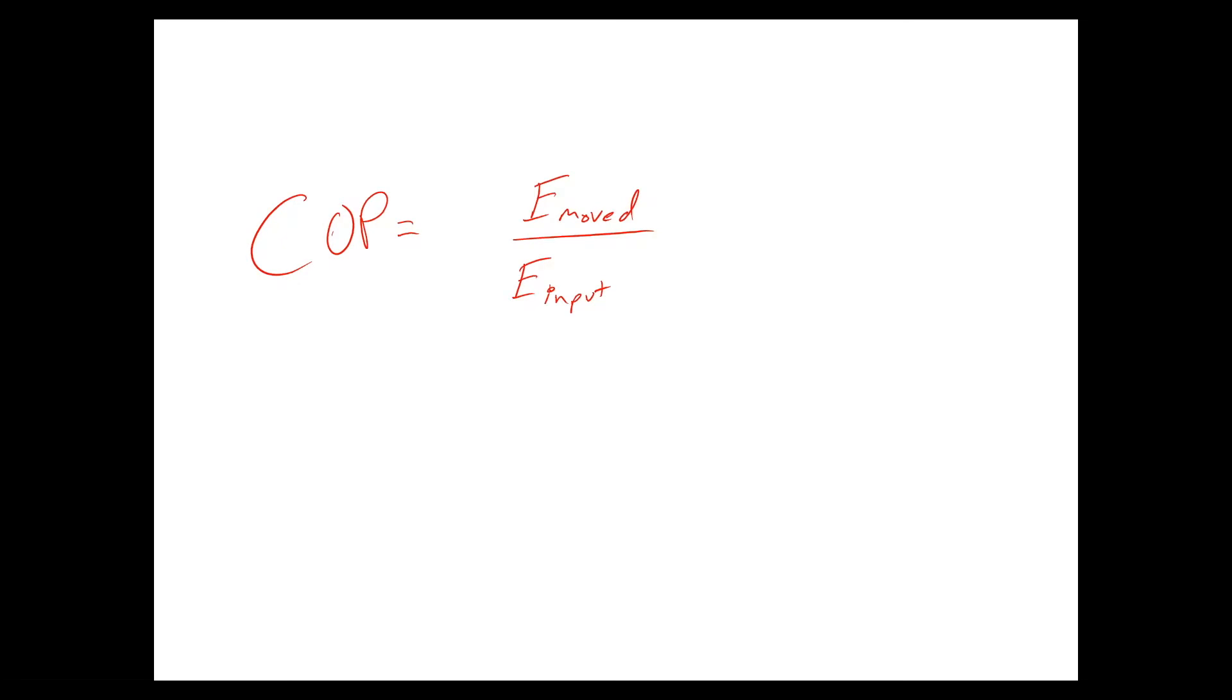Okay, let's talk about coefficient of performance, which is commonly used as a performance metric to rate heat pumps and air conditioning equipment. The coefficient of performance is the energy moved, the amount of energy that is moved by the system divided by the energy going into the system.